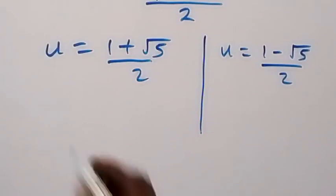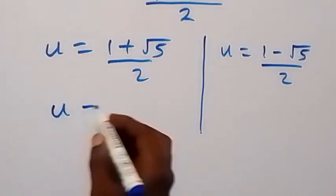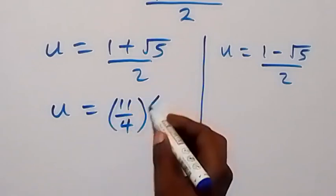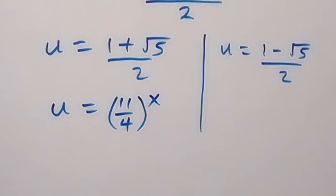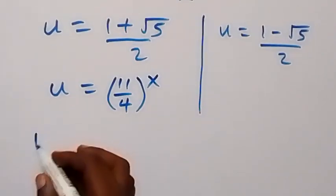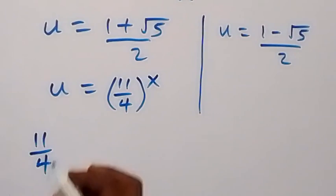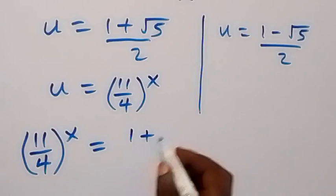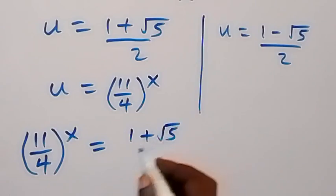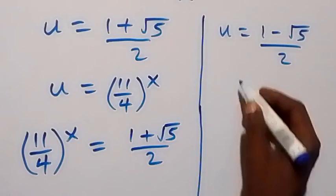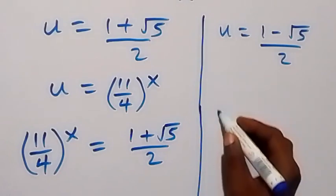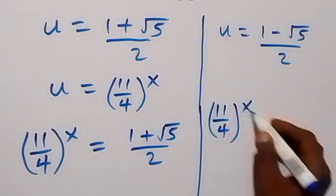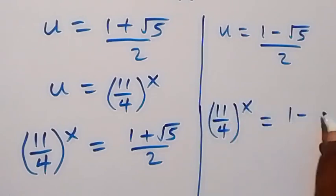So from here we can say (11/4) raised to power x equals (1 plus root 5) over 2. Similarly, (11/4) raised to power x equals (1 minus root 5) over 2.